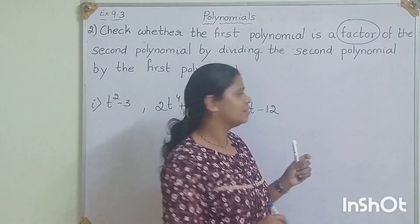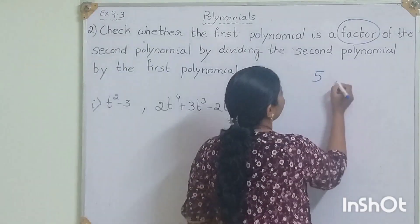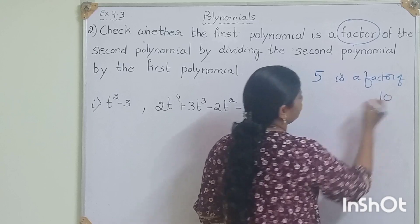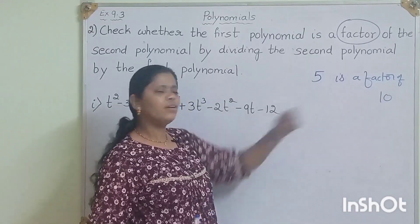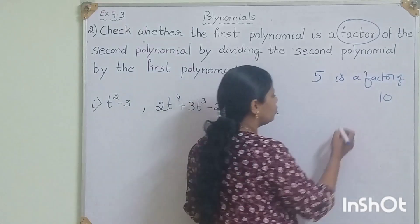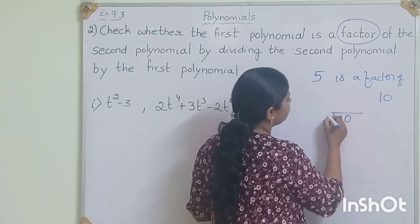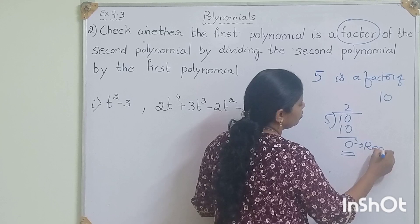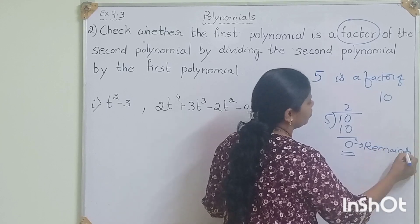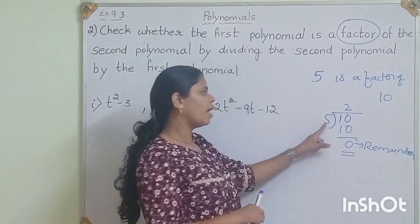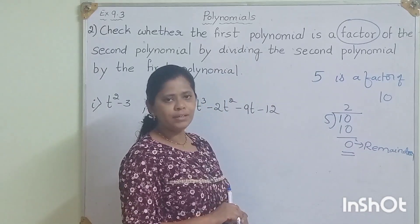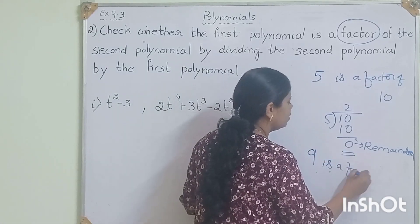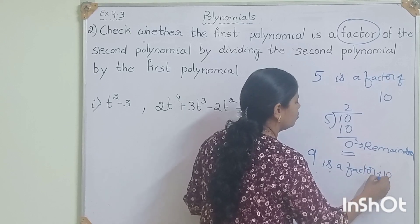Is 5 a factor of 10? Yes. Because when we divide 10 by 5, we will get 0 as remainder. Therefore, 5 is a factor of 10. But is 9 a factor of 10? No. Because when we divide 10 by 9, 9 goes once and 1 is the remainder.